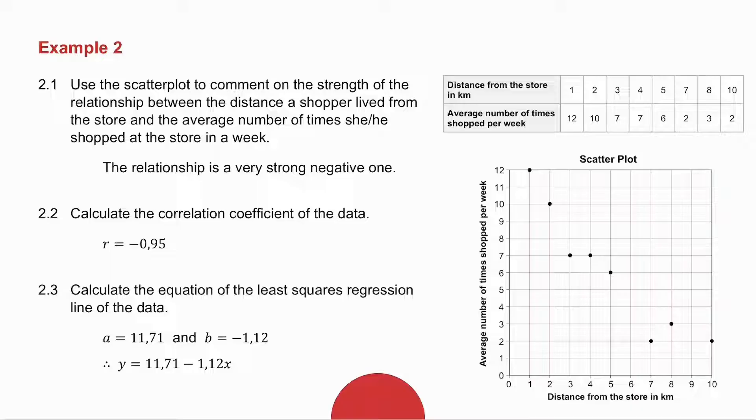2.2, they ask you to calculate the correlation coefficient. Use the data, enter it into your calculator, and you get an R value of minus 0.95.